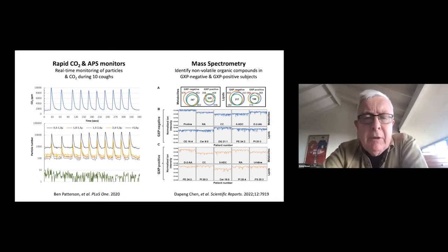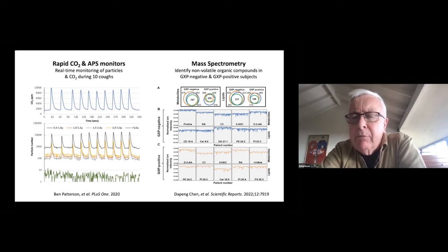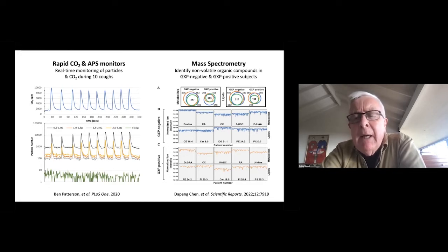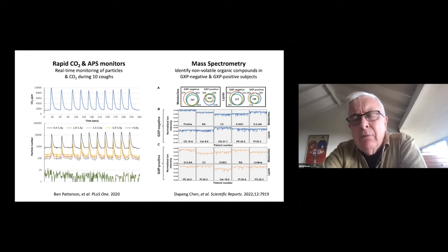That data was published a couple of years ago. On the right hand panel, which is something a little hotter off the press — just reported in Scientific Reports — this is the work of Da Peng Chen. He showed a panel of metabolites and lipids which were increased in well patients that didn't have TB, and in patients with TB. By combining these data together, you can get quite high predictive values — ROC curves with areas under the curve of about 95%.